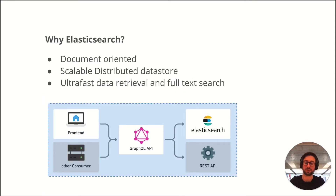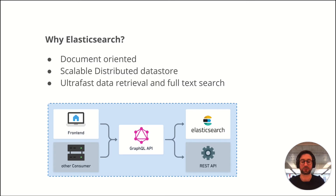As a storage backend, we use Elasticsearch. Its document-based design allows us to aggregate all different types of data sources and store it redundantly for fast access and full-text search. This way, we can not only provide a fast search over different data sources, but also deliver all kinds of data request needs in a simple, fast and convenient way.